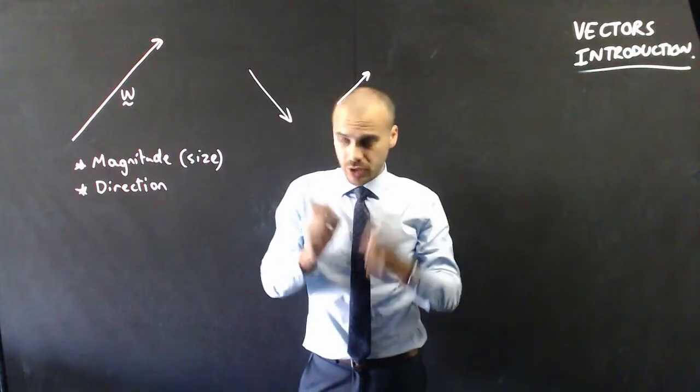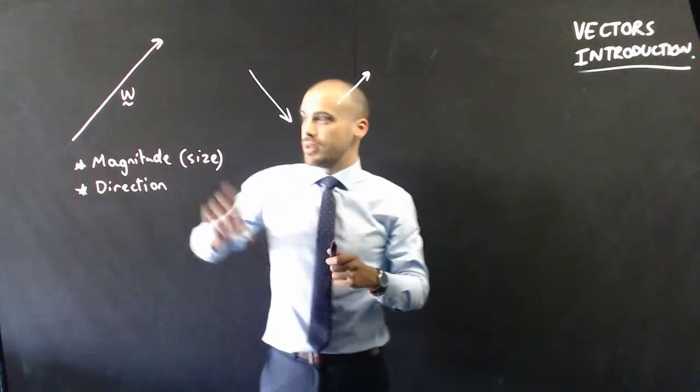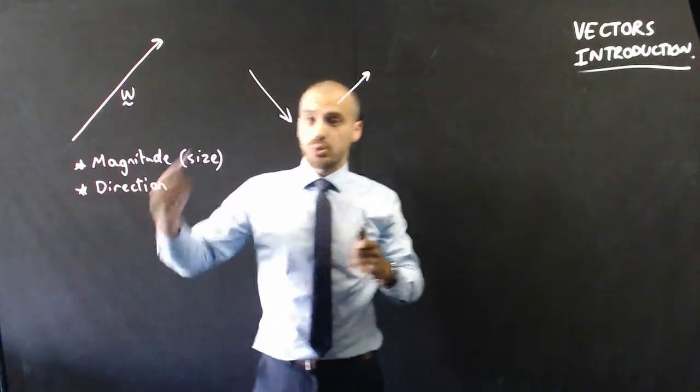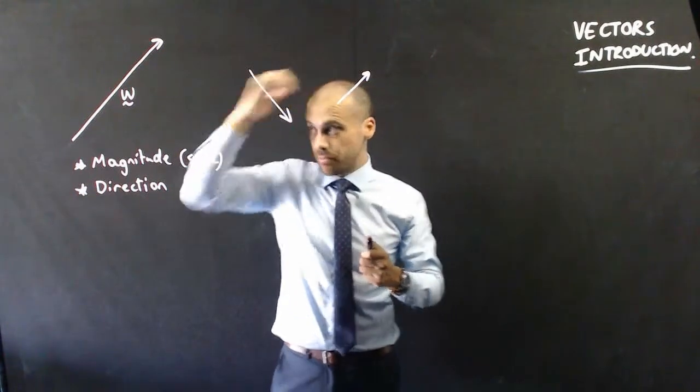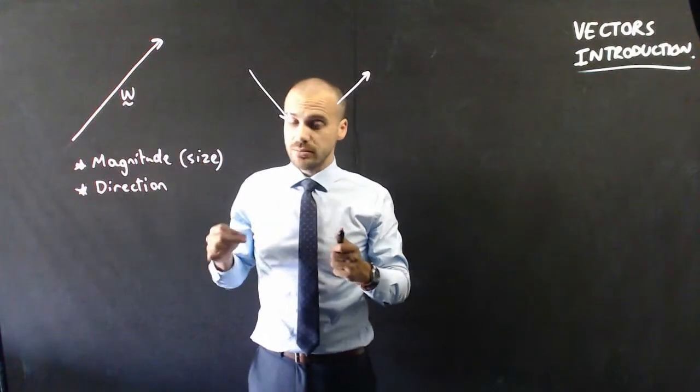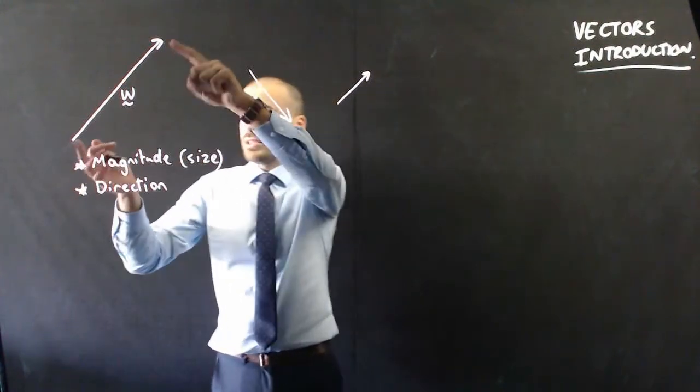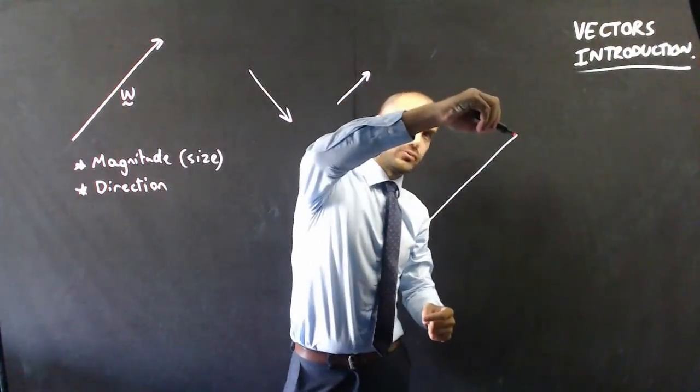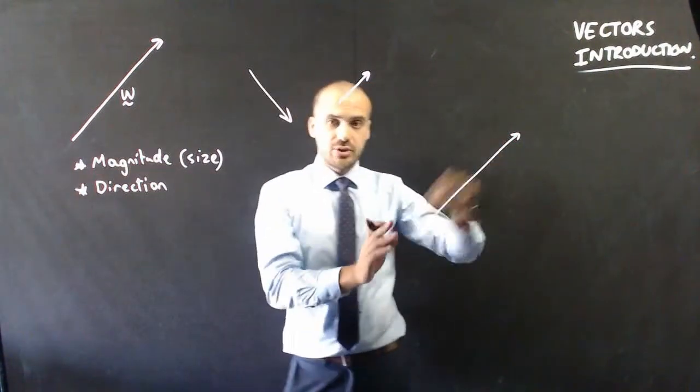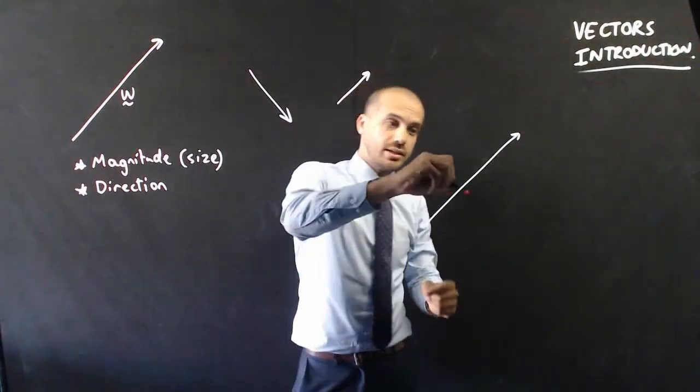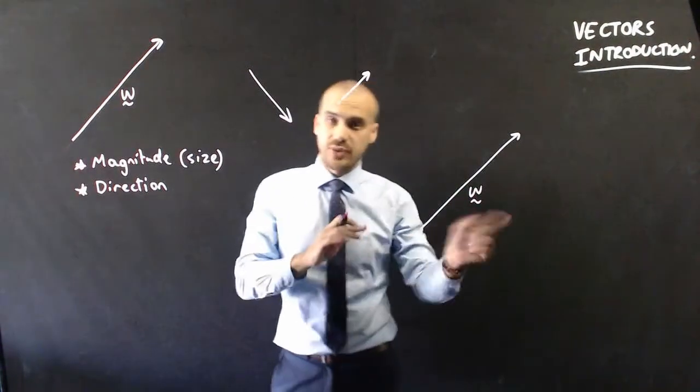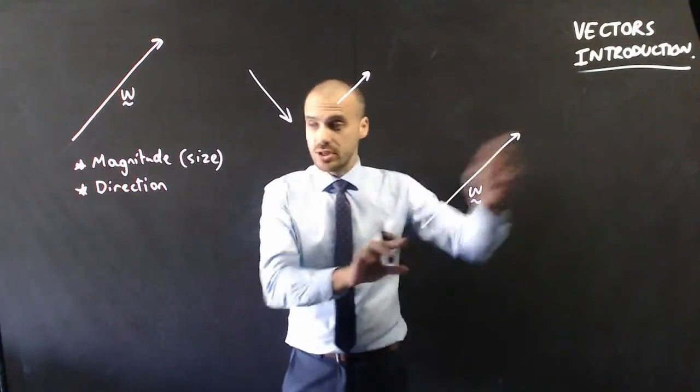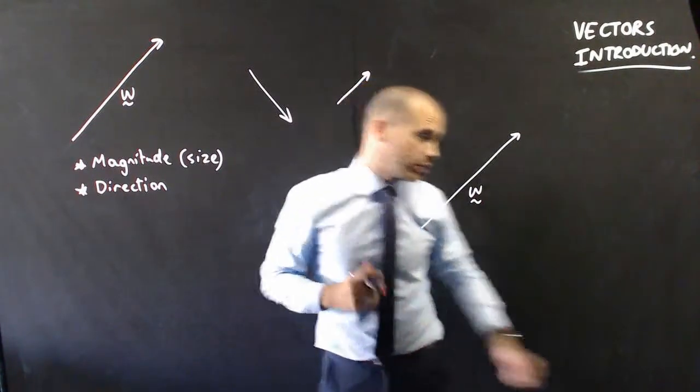Important to know, I'm going to say this right from the beginning so we get it right: magnitude matters, direction matters, but where it starts from doesn't matter. I can pick up this arrow and move it from here to here, and as long as it's the same length and going in the same direction, it's the same vector. It doesn't matter where they start from, as long as they're the same size and moving in the same direction.